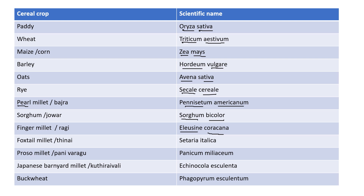Foxtail millet, also called thinai, has the scientific name Setaria italica. Proso millet or panivarag has the scientific name Panicum miliaceum. Japanese barnyard millet, also called gudrei valley, has the scientific name Echinochloa esculenta. Buckwheat has the scientific name Fagopyrum esculentum.